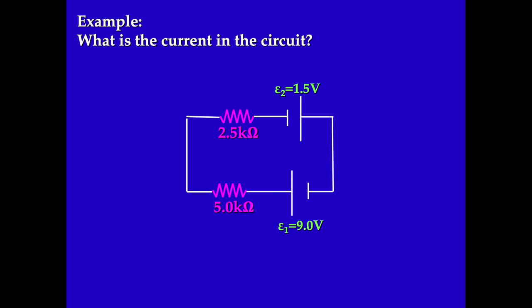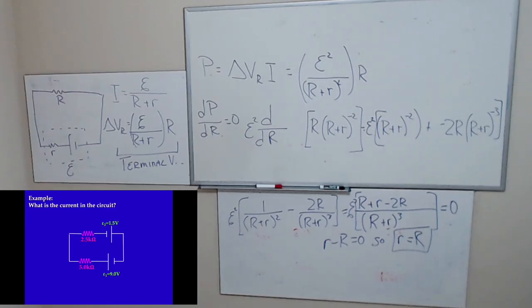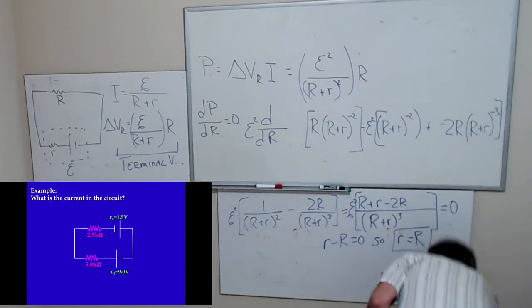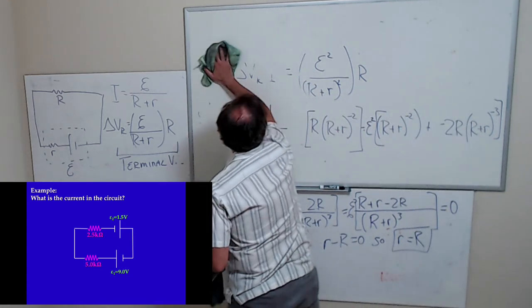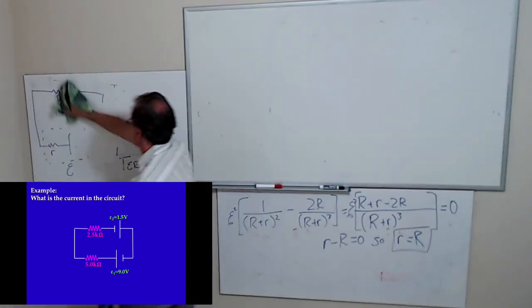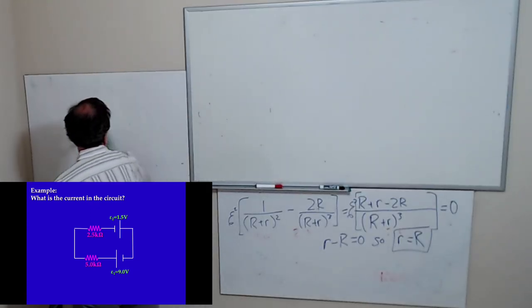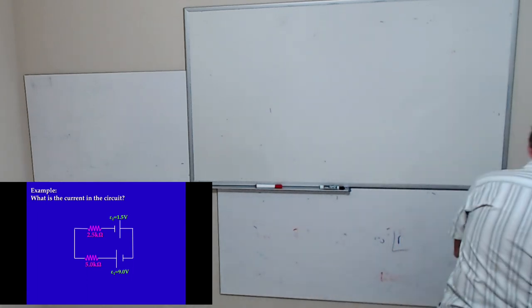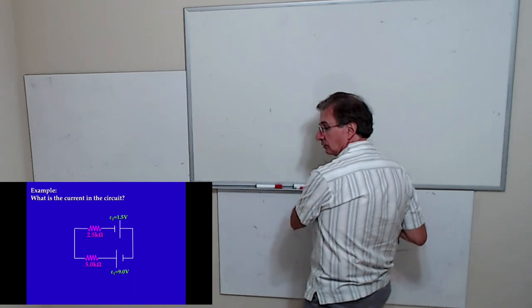Let's look at this circuit - it has two power supplies in it and I want to calculate the current in the circuit. This is one of those examples where I actually have to use Kirchhoff's laws. This is a simple example where I have to use the loop rule. Kirchhoff's voltage law says that the sum of the voltage drops around the loop is zero.